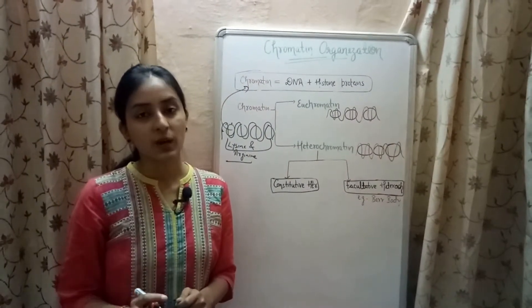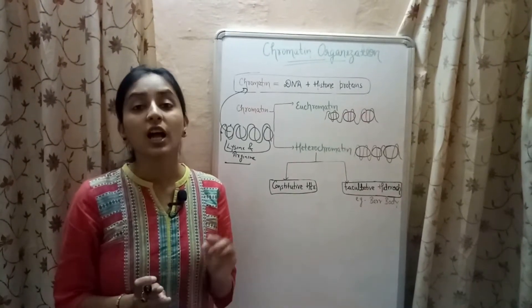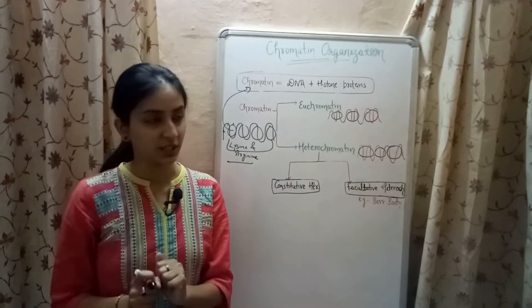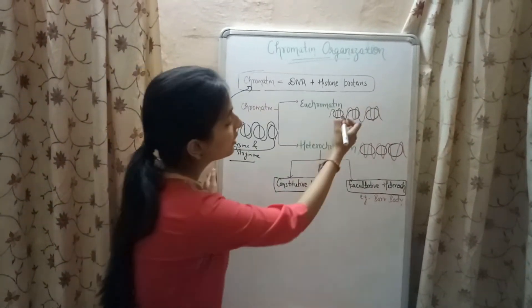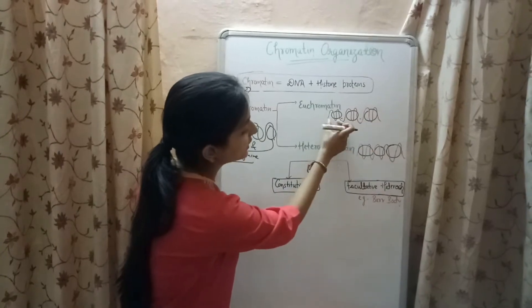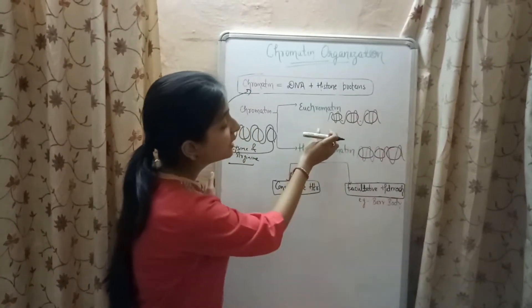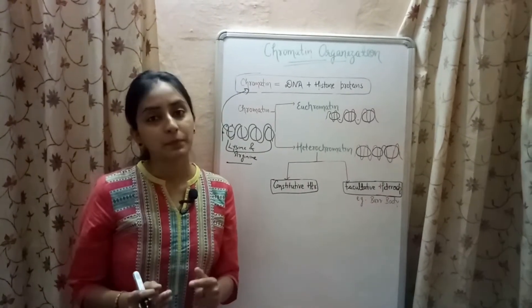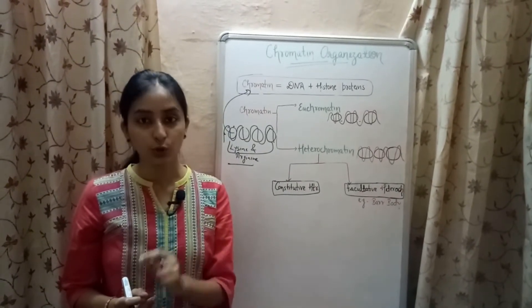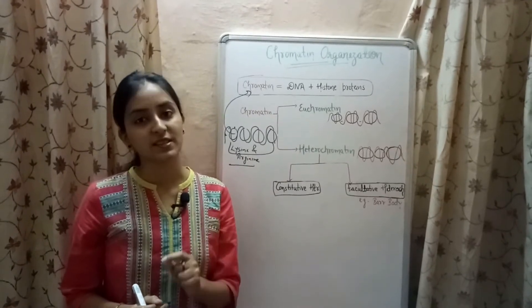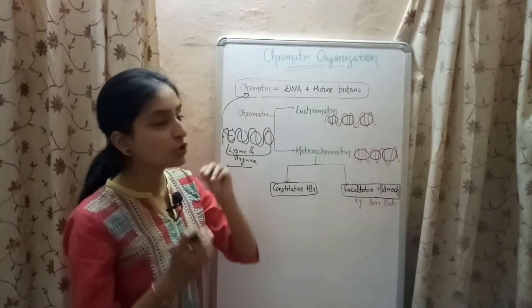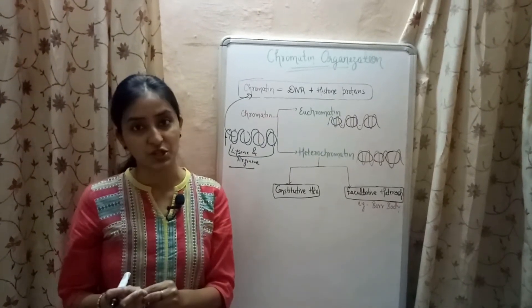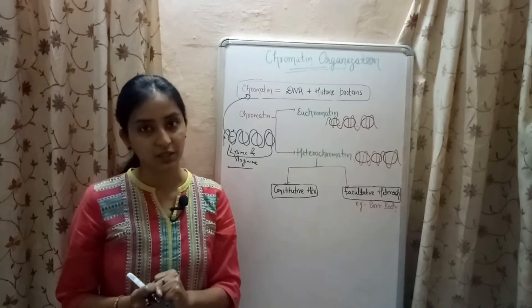There are two types of chromatin: euchromatin and heterochromatin. Euchromatin is the loosely packed, uncondensed form of chromatin, which means there is considerable space between the histone molecules. The DNA present inside the euchromatin is transcriptionally active — it can be easily transcribed to form RNA. Because of the loose packaging, euchromatin is sensitive to mutations and easily affected by environmental factors.